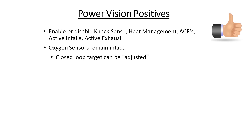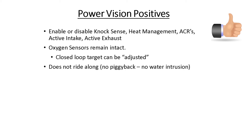The home oxygen sensors can remain intact and we can actually adjust the closed-loop target so that we can still run closed-loop and take advantage of that tool, which helps address and correct for different fuel blends you might get. You can still make it run just a little bit richer than what they run at from the factory, but keep closed-loop turned on — it's a good tool. It doesn't ride along, it's not a piggyback, so you don't get the water intrusion and any other issues you might get from a piggyback box.